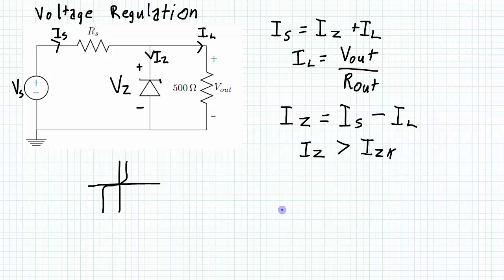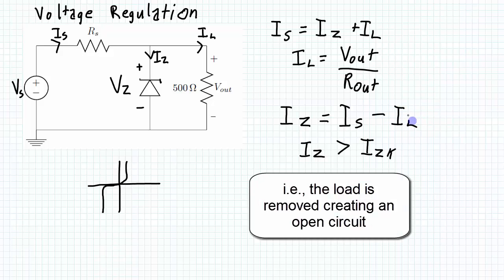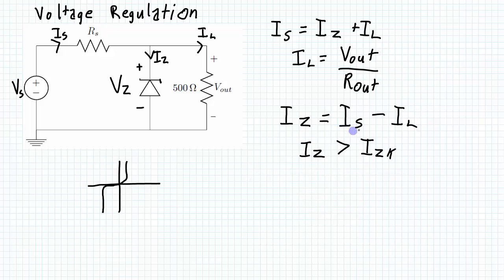At the other extreme, if the load current is really small or even goes away, Iz will equal Is. We need to make sure that the current going through the diode then is not too much to cause the diode to burn out — basically, you need to make sure it stays below the rated power dissipation.